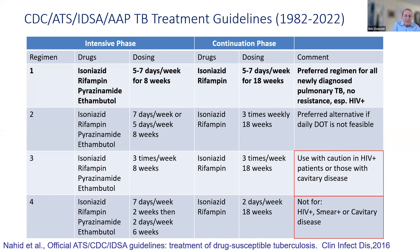Moving on to treatment: the standard treatment for TB and TB-HIV has been unchanged in the last 40 years. It's a four-drug regimen of isoniazid, rifampin, pyrazinamide, and ethambutol given for six months, with daily treatment being the number one regimen recommended for all patients, especially people with HIV.